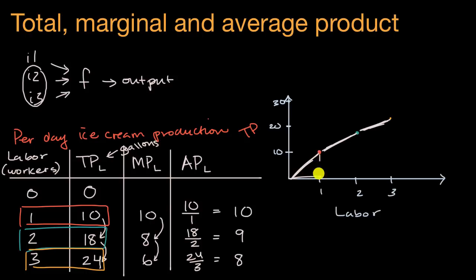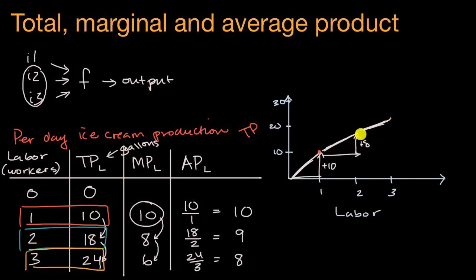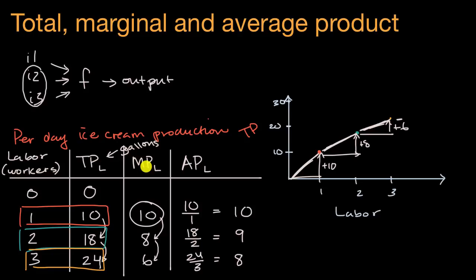When we go from zero to one worker, we added plus 10, and you can see that in the marginal product of labor. As we add one more person, it goes plus eight. Then we add another person, it goes plus six. In general, if you see total product as a function of labor and the curve is getting less and less steep, that tells you your marginal product is going lower and lower, and you're getting diminishing marginal returns.